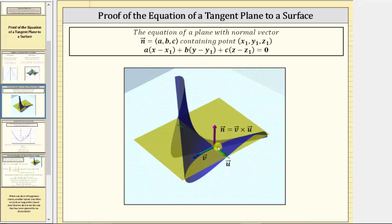Notice how in this case, this normal vector was determined by the cross product of vector v and vector u. To better understand how we are going to determine vector u and vector v, which are the two vectors in the tangent plane, let's look at a similar example in two dimensions.